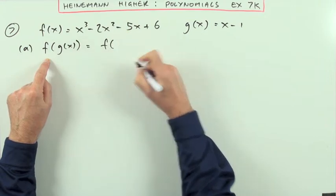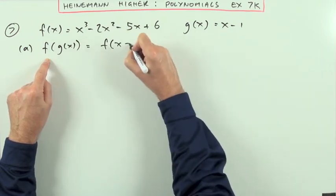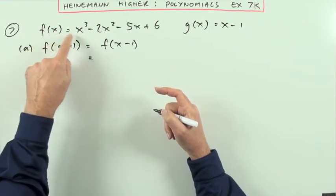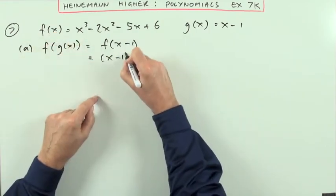Well, f of g of x means f is going to act on what g produces, which is x minus 1. And what f of x does to anything it gets hold of is it cubes it.